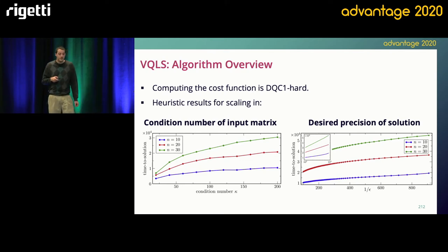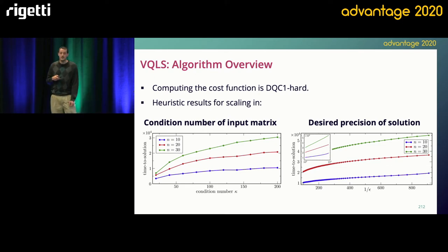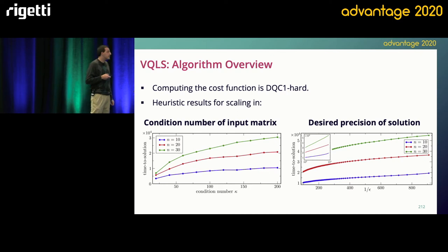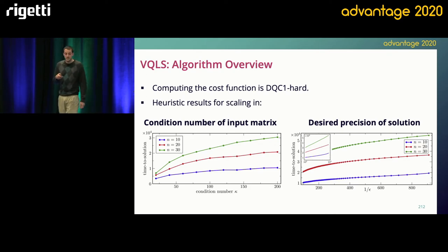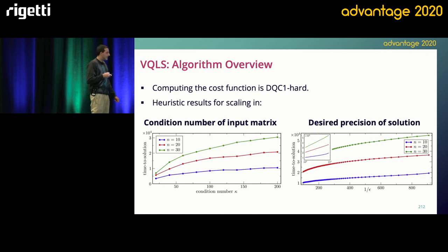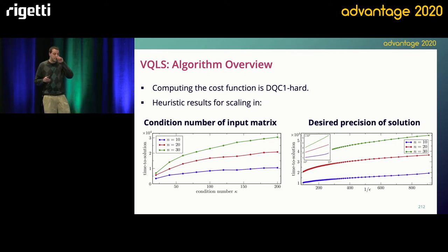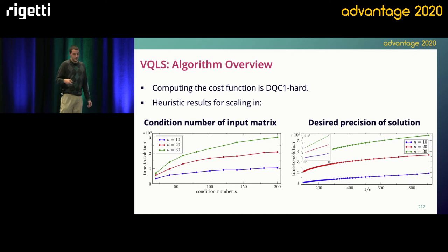There are a few things I want to highlight from the paper. First, one thing we show is that computing the cost function — we propose multiple cost functions — and we show that computing them is DQC1 hard. For our purposes, that means it's hard to do this classically, so we have motivation that you want to do it on a quantum computer. We also look at some heuristic scaling results — no rigorous proofs — but for particular linear systems, we look at how the scaling goes in the condition numbers of the input linear system matrix and also the desired precision of the solution. The vertical axis is on a log scale, and the important thing to note is that this line is sublinear, which means that things aren't blowing up too badly.